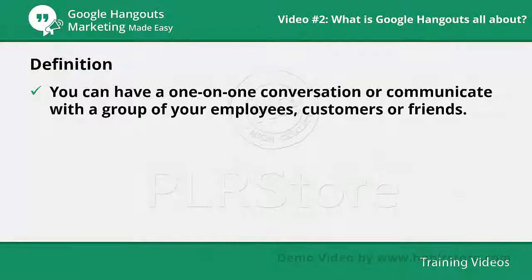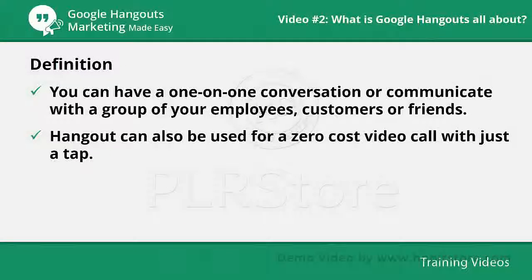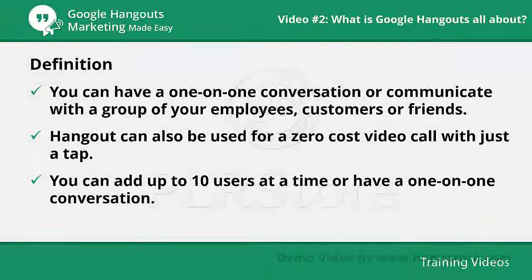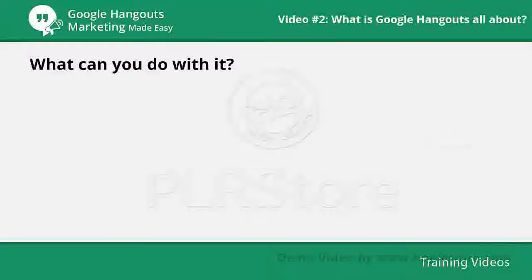You can have a one-on-one conversation or communicate with a group of your employees, customers, or friends. The chat synchronization feature makes communicating easy. Hangout can also be used for a zero-cost video call — with just a tap you can add up to 10 users at a time or have a one-on-one conversation. You can make free voice calls with your devices to other hangout users.